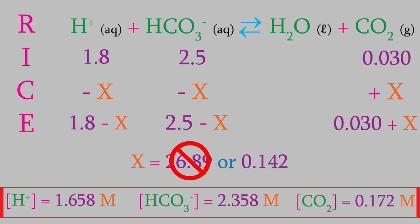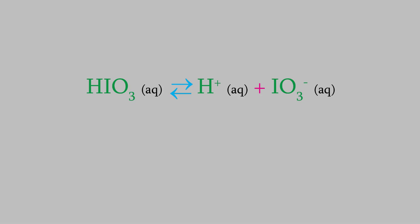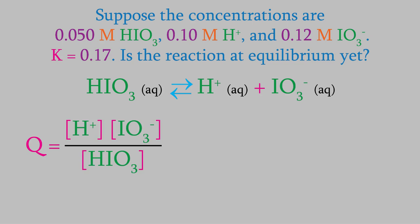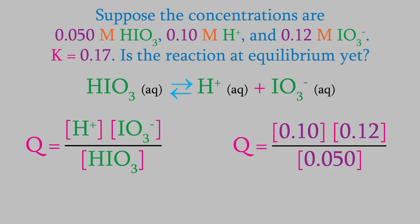This is an important kind of calculation, so let's try one more example. Suppose we perform this reaction, and after a while we find that HIO3, which is iodic acid, has a concentration of 0.050 molar, the H+ concentration is 0.10 molar, and the iodate concentration is 0.12 molar. This reaction has an equilibrium constant of 0.17. Our first question is: is the reaction at equilibrium yet? The way to find out is to calculate Q, the reaction quotient — that's the ratio between the products and reactants. We plug in the concentrations, and when we solve the formula, we find out that Q is equal to 0.24. That's not the same as K, so our reaction is not at equilibrium yet.